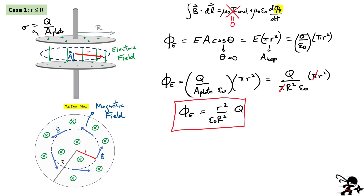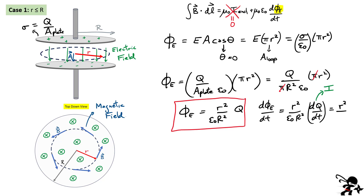What we're interested in for Ampere's law is how this flux changes with time — d phi over dt. All the other terms are constant, so we're left with dq over dt. Well, dq over dt is actually the definition of our real current — the rate at which charge is changing as this capacitor is charging. So we can write this last expression as r squared over R squared, times epsilon zero, multiplied by that current.